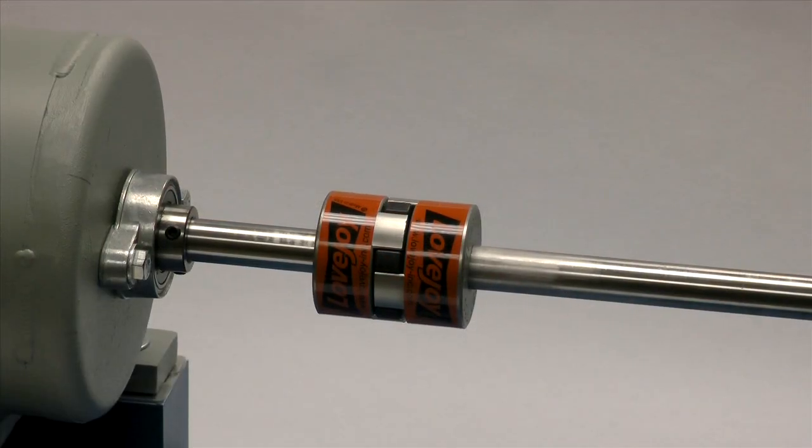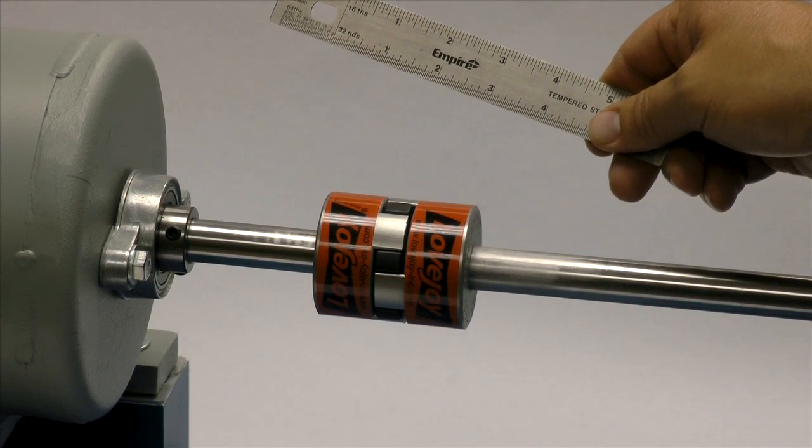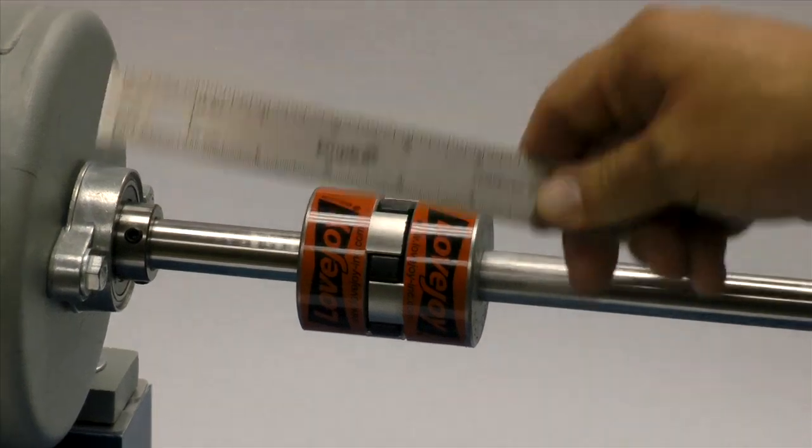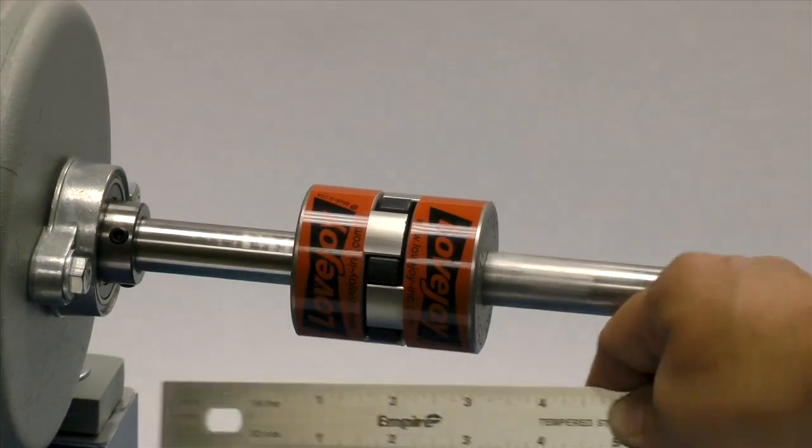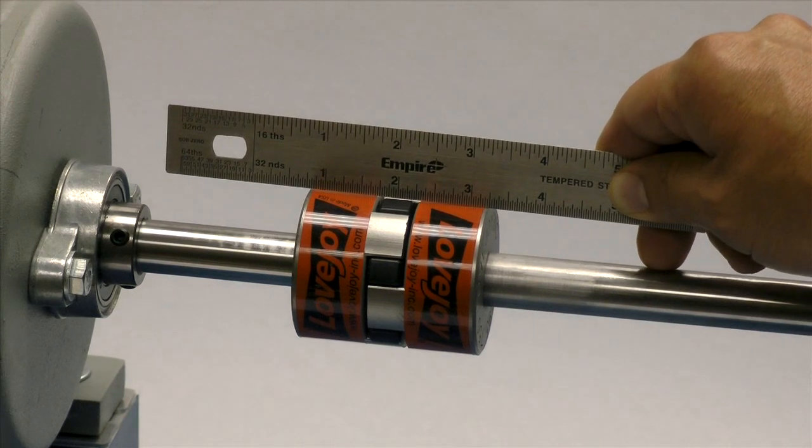Lay a straight edge across the hubs to check the basic alignment. If all sides of the coupling are accessible, check the hubs at four locations: 3 o'clock, 6 o'clock, 9 o'clock, and 12 o'clock without rotating the shafts.